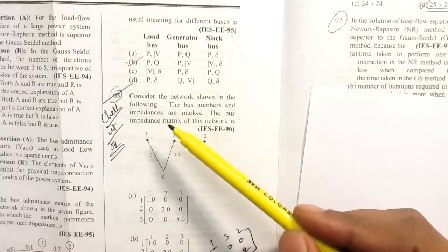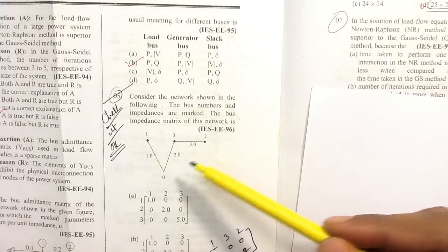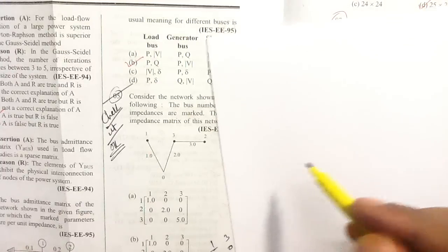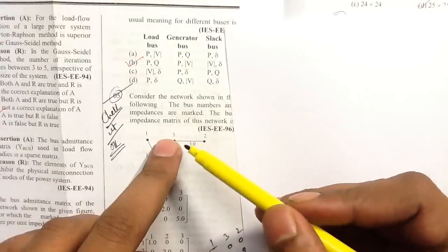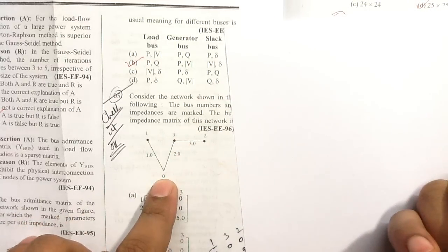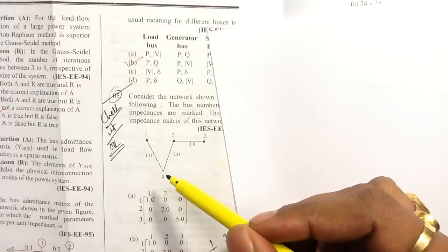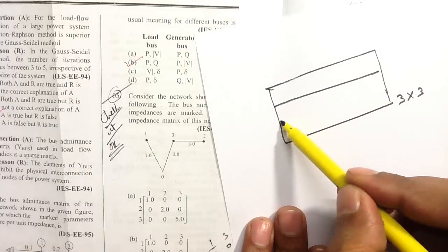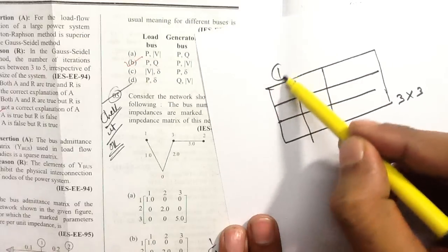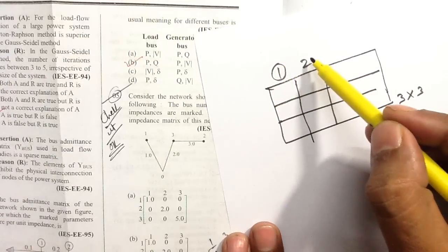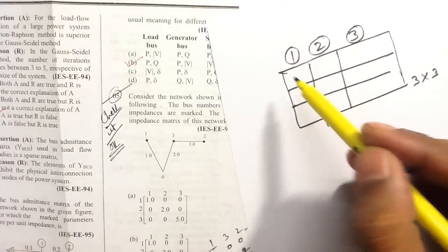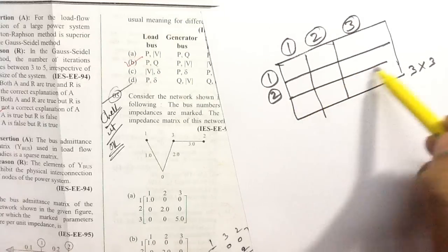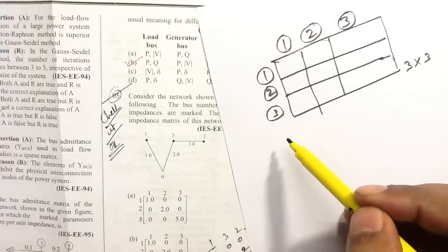In question number 5, we have to find out the bus impedance matrix. The shortcut method to find out the bus impedance matrix: the network has bus number 1, bus number 2, bus number 3, and a reference bus zero. Excluding the reference bus, there are three buses, so the size of the bus impedance matrix will be 3×3 — three rows and three columns, each corresponding to the respective buses.